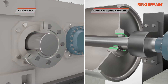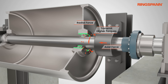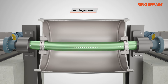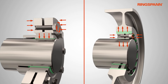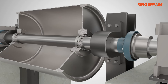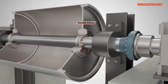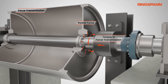Shrink discs and cone clamping elements are capable of transmitting higher torque, axial and radial force, and bending moment. The clamping forces are reached by tightening the clamping screws, which pulls the conical surfaces to each other, thereby generating radial forces and providing the required frictional connection between the parts involved for torque or force transmission.